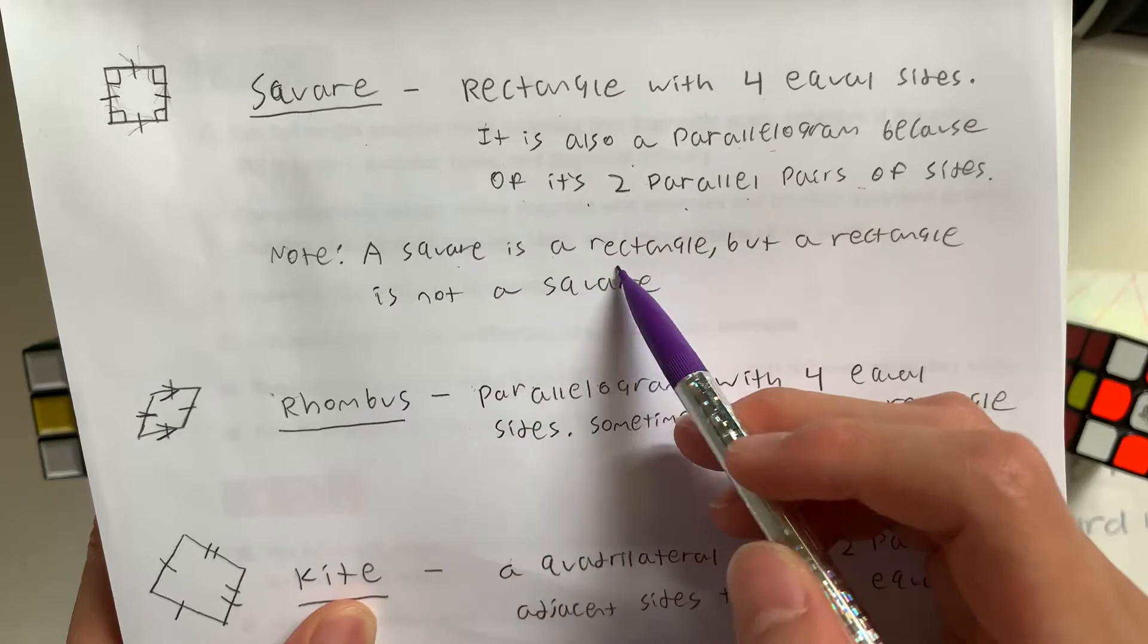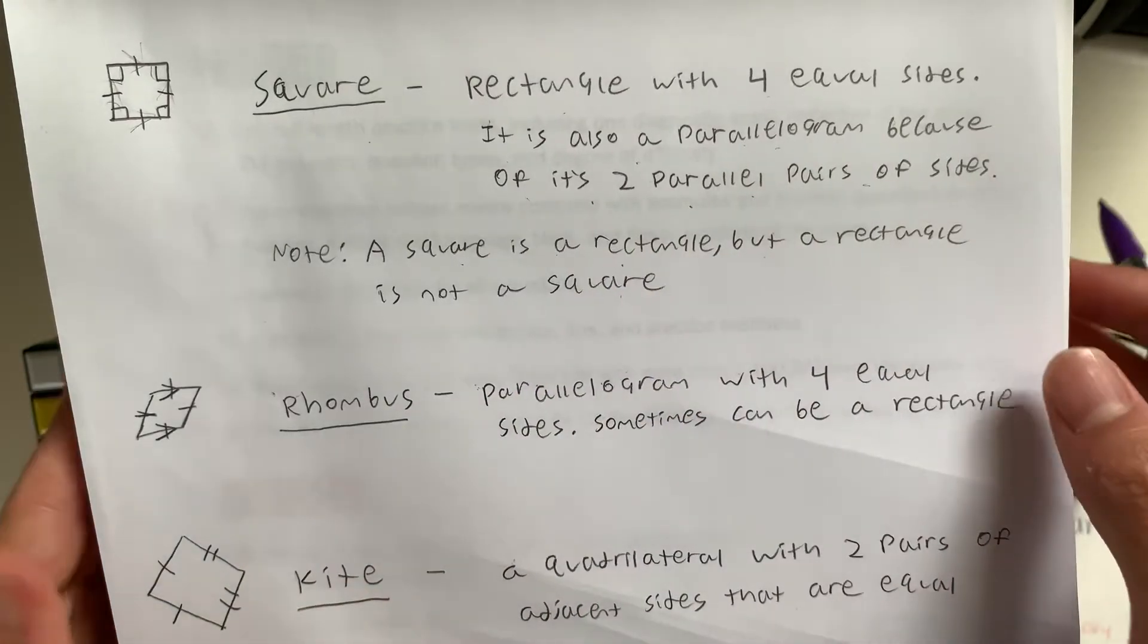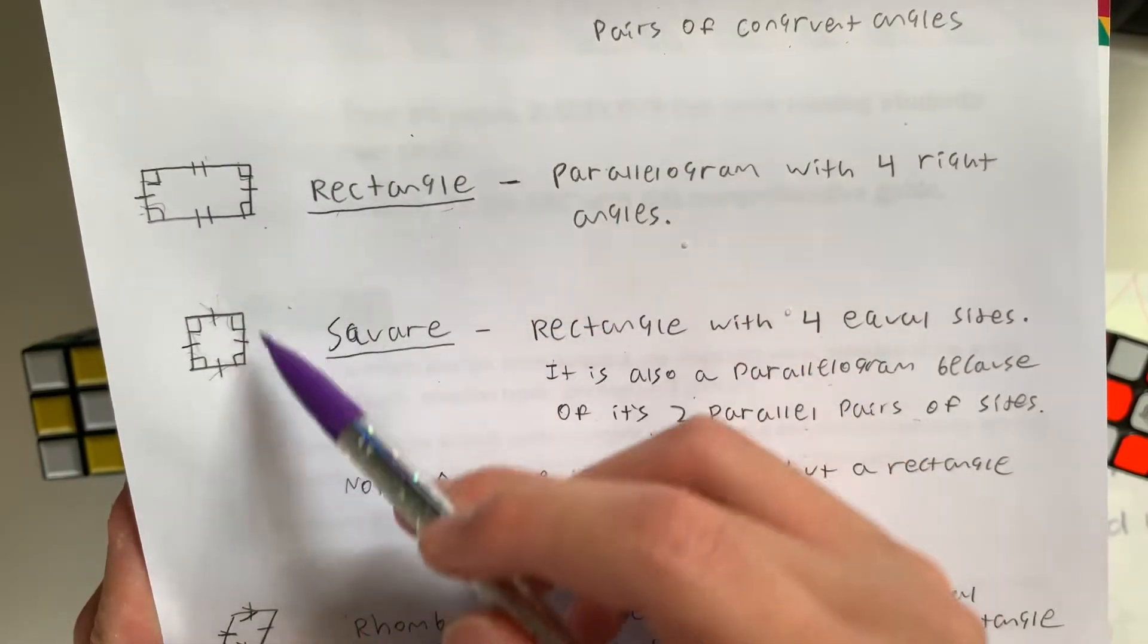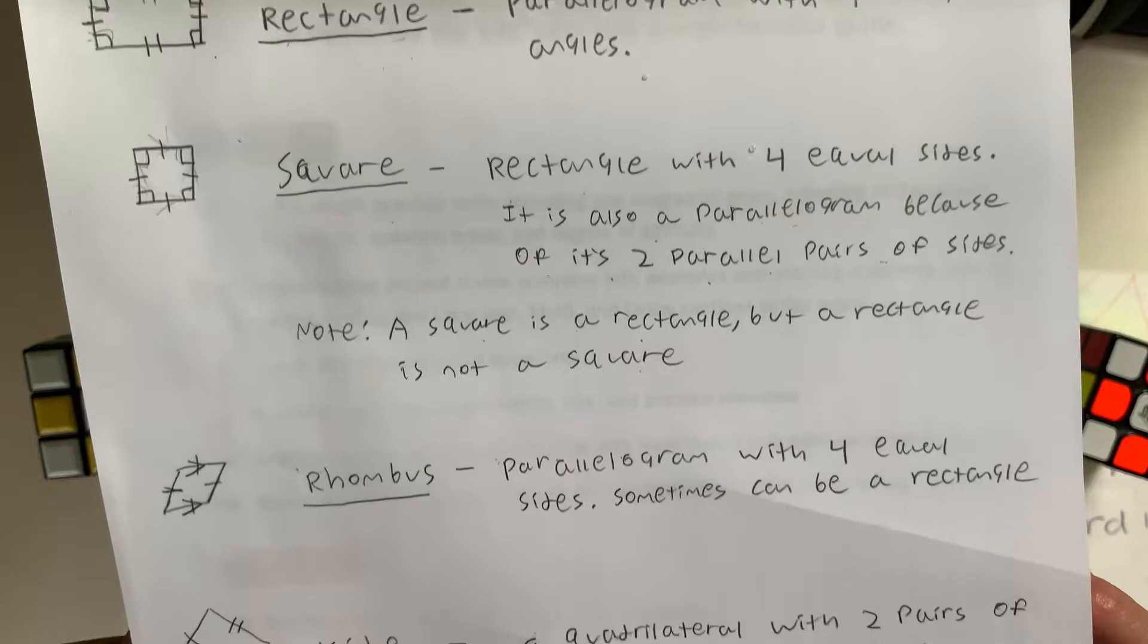A square is a rectangle, but a rectangle is not a square. Why? Because a rectangle does not have all equal sides. It could look like this, not like this. Let's move on to another quadrilateral.